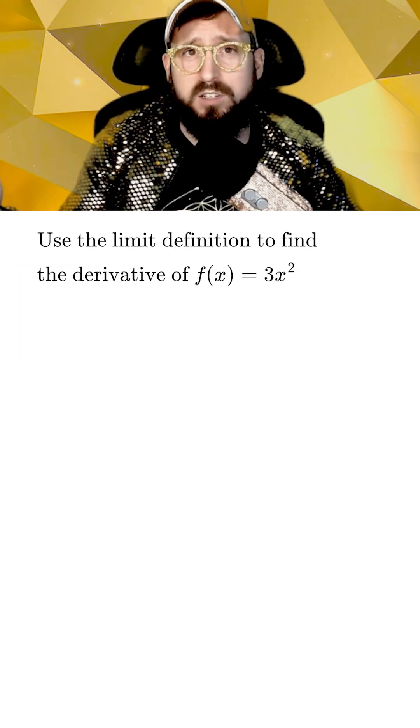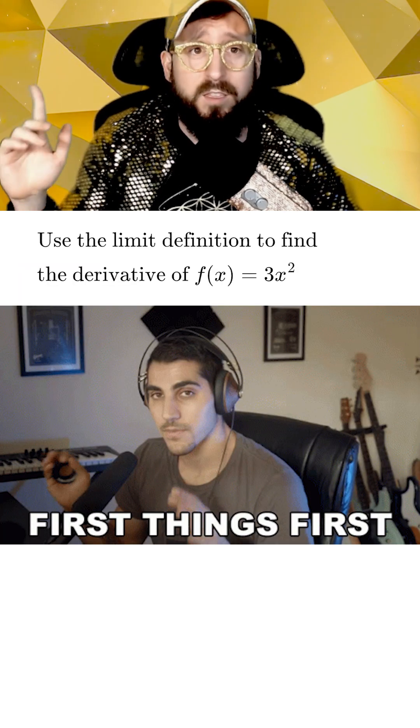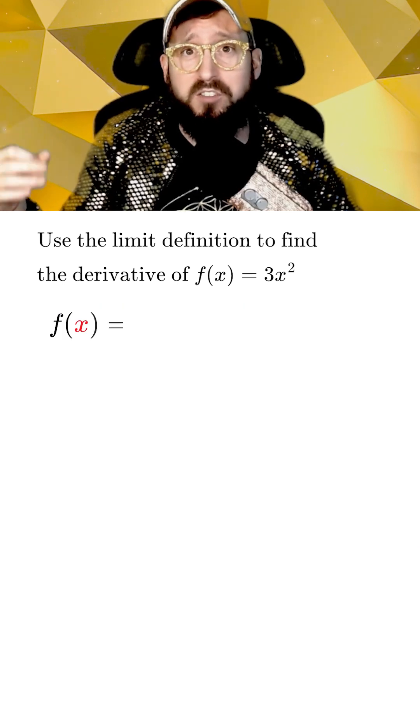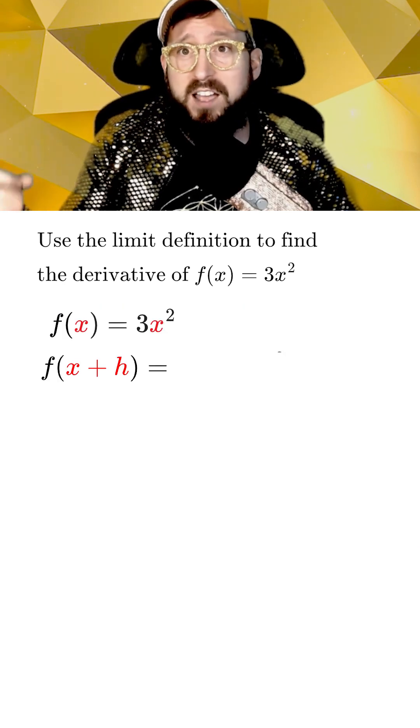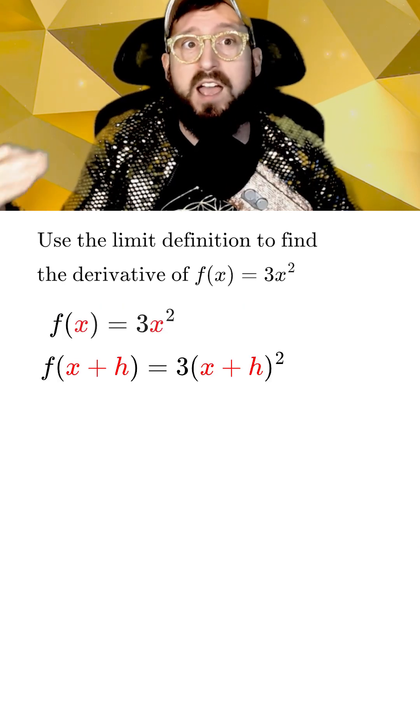Let's consider using the limit definition to find the derivative of 3x squared. The first thing we're going to do is write our f of x as 3x squared, which means that f of x plus h would just equal 3 times x plus h squared.